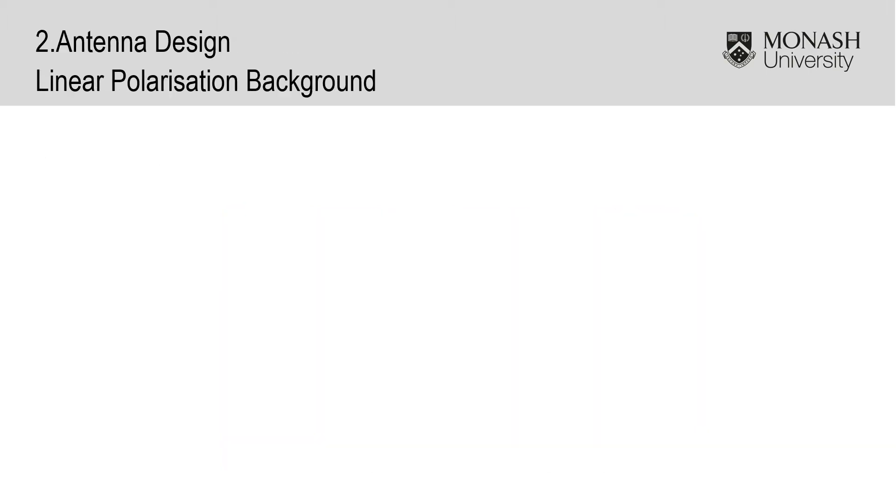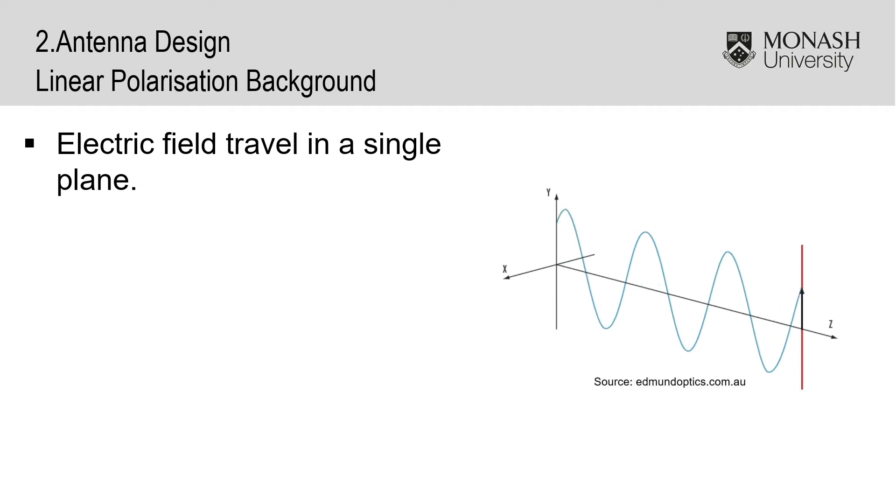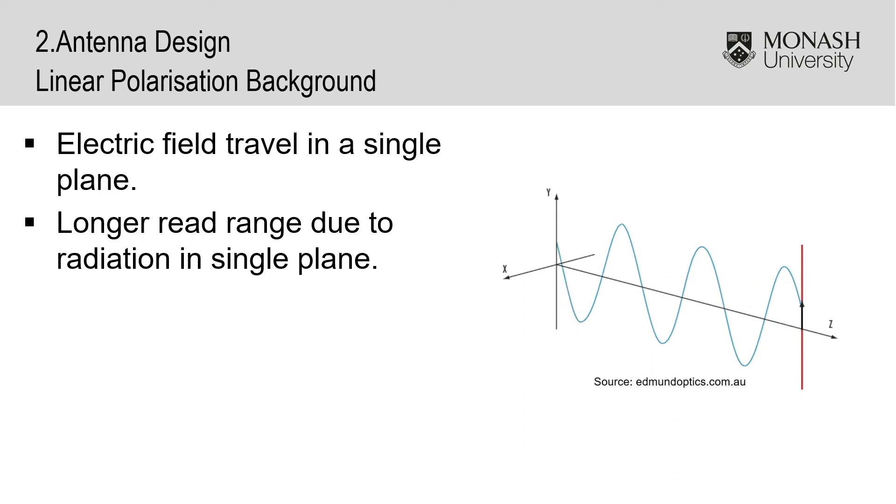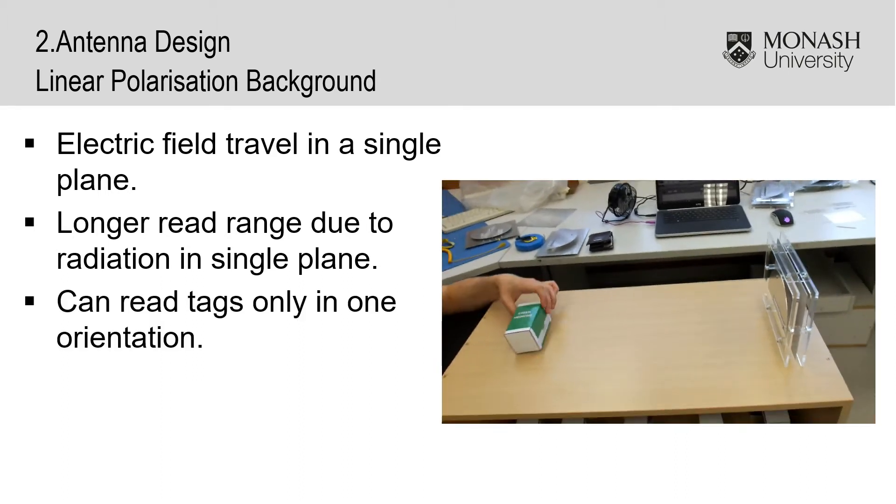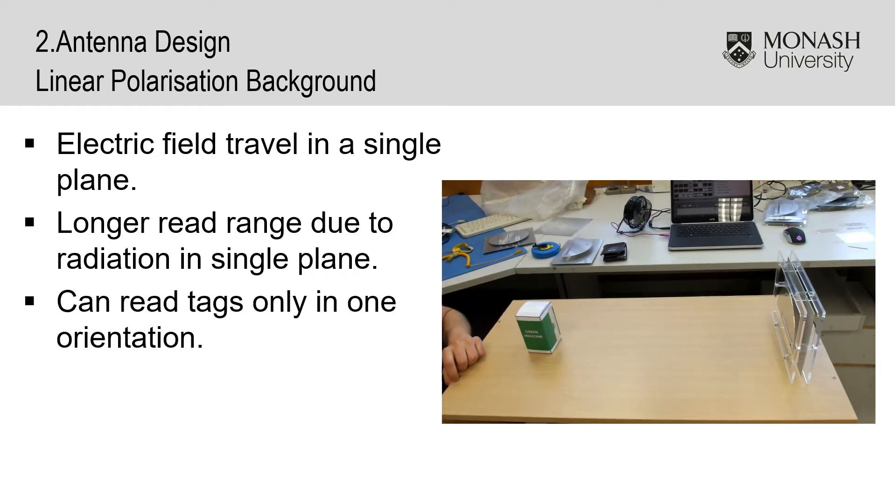When an antenna is linear polarized, its electric field travels in a single plane. These types of antennas have a longer read range since all of the energy emitted is limited to a single plane. However, this also has the disadvantage of only allowing tags to be read in a single direction.